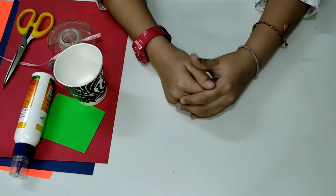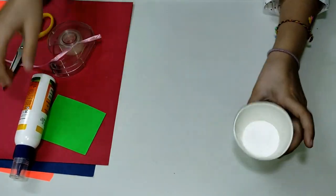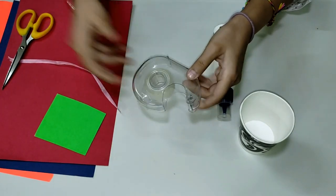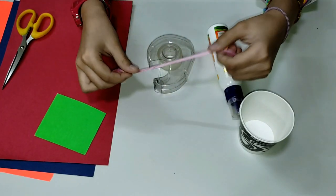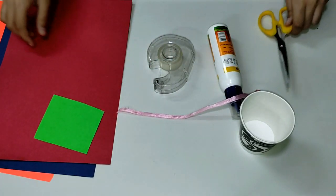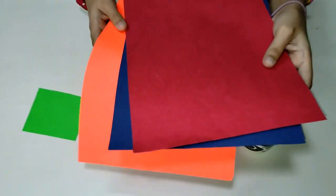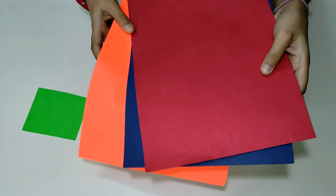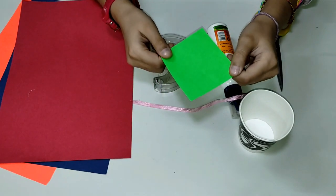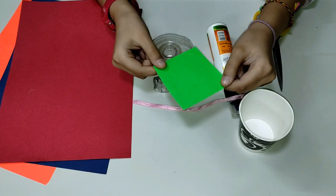So the materials you need are a paper cup, you can also use a plain one, glue, tape, a ribbon, this is optional, a pair of scissors and we will need only one colored sheet. You can choose whichever color you want. We need only this much of the sheet and it has to be approximately 5 to 6 centimeters.